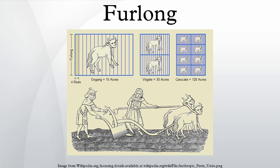Much of Ontario, Canada, was originally surveyed on a ten-furlong grid, with major roads being laid out along the grid lines. Now the distances are shown on road signs in kilometers, it is obvious that these major roads are almost exactly two kilometers apart. The exits on highways running through Toronto, for example, are generally at intervals of two kilometers. The furlong is also a base unit of the humorous FFF system of units.